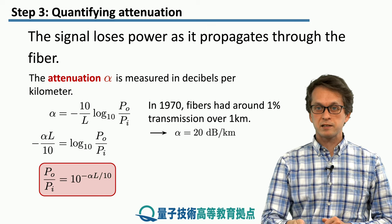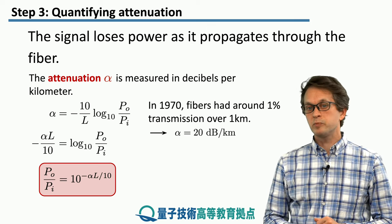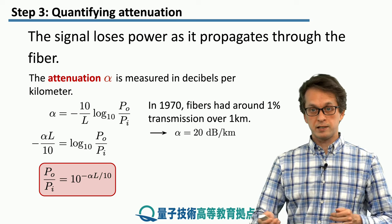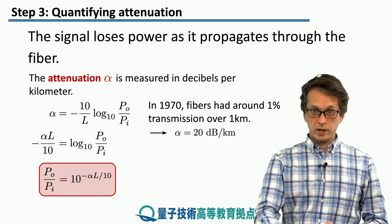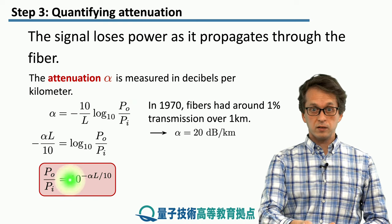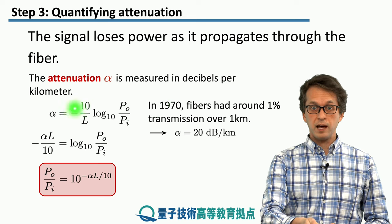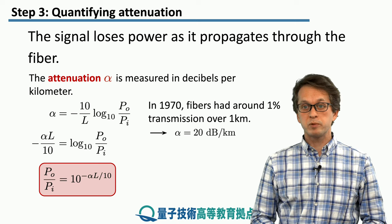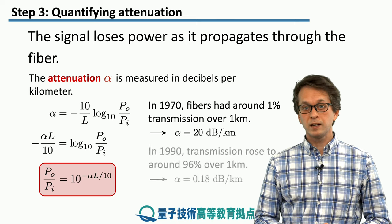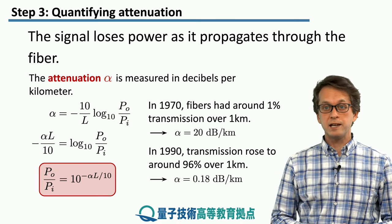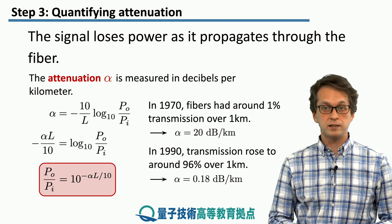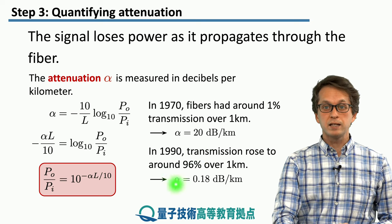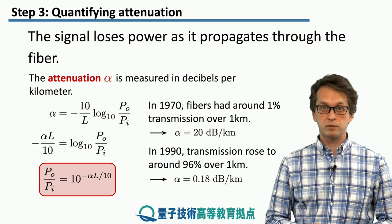In the previous lessons we said that in 1970, the optical fiber managed to transmit 1% of the power that was put in over a distance of 1 kilometer. Plugging this into the formula, we obtain that alpha, the attenuation parameter, is 20 decibels per kilometer. Then, two decades later, the transmission rose to around 96% over 1 kilometer, which corresponds to an attenuation level of 0.18 decibels per kilometer.